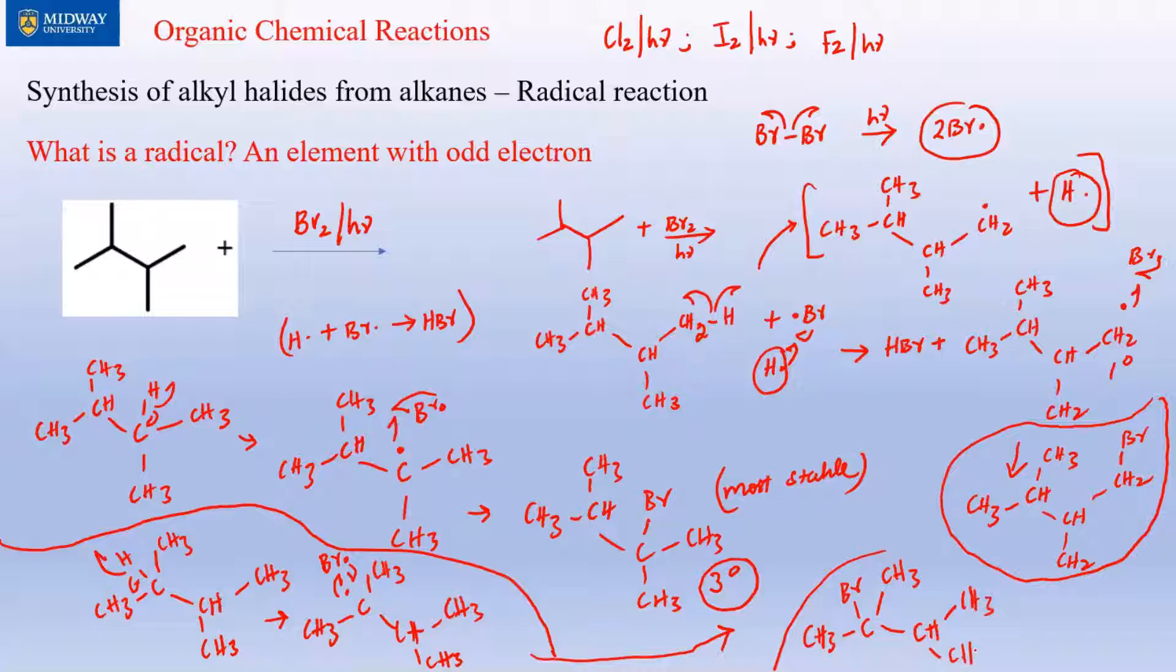This is also a tertiary alkyl halide, plus you produced HBr here. The H radical reacted with one of the Br radicals. This is also a tertiary alkyl halide because the carbon containing the radical does not have a hydrogen, so that's tertiary and more stable.